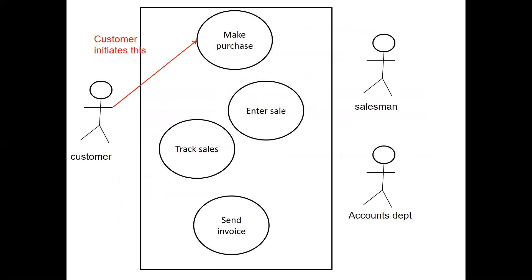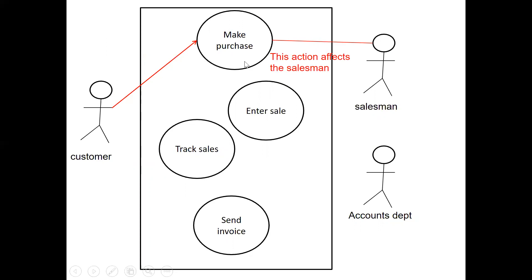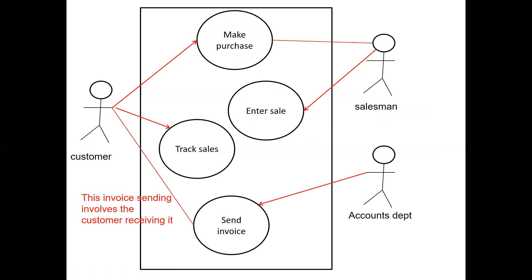Finally, add your association lines. Add arrows if an actor initiates the use case. For example, the customer initiates 'make a purchase' and the salesperson responds — you don't need another arrow coming back. The salesperson can also initiate 'enter a sale.' The invoice sending involves the accounts department generating an invoice, sending it to the customer, and the customer responds.